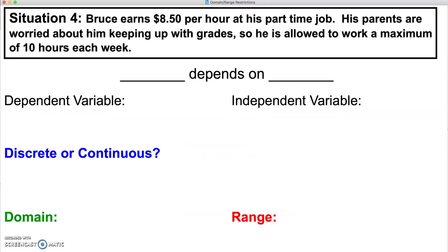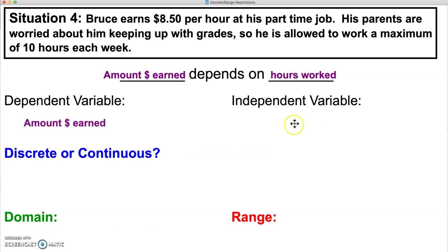Situation number four: Bruce earns $8.50 per hour at his part-time job. His parents are worried about him keeping up with grades, so he is allowed to work a maximum of 10 hours each week. He works a certain amount of hours and earns some money based on those hours worked. The amount of money that Bruce earns depends on the hours worked, so we know our dependent and independent variable. Time is going to keep rolling no matter what, so all of those points are going to be connected — we can work for half an hour, for 15 minutes, for 1 minute and 22 seconds — so this is going to be a continuous situation.